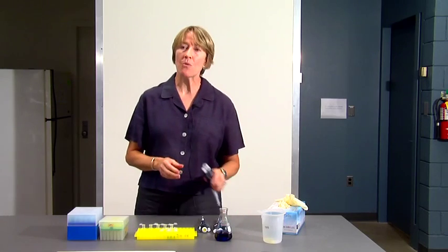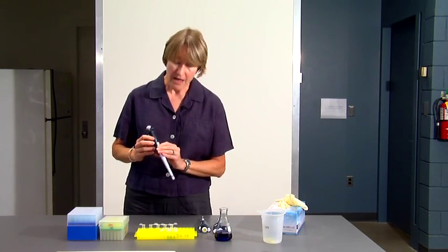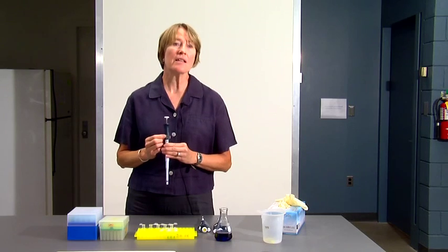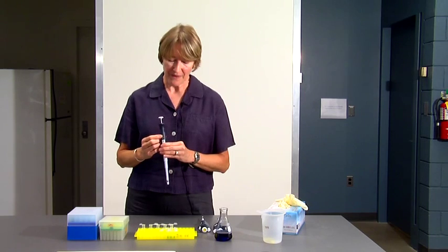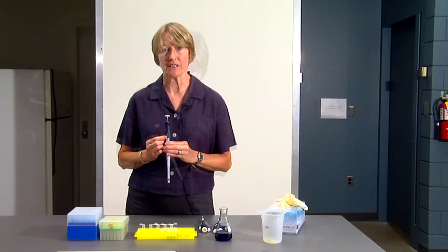Now let's look at the P1000. The P1000 also has three numbers, but notice that the top number is in red. So that's an alert signal. The top number is not 100s, it's thousands. So 100 is not 100 microliters, it's 1000 microliters.